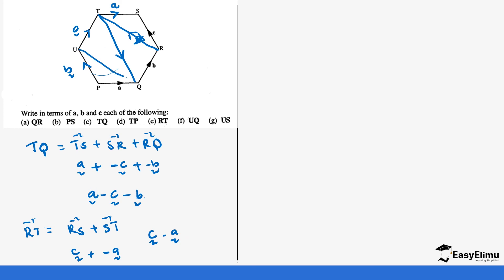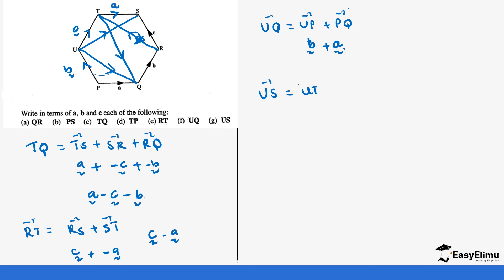For UQ, we are moving from U to Q. So UQ equals UP plus PQ. UP is b and PQ is a, so the answer is b plus a. Finally for US, we move from U to S. We can go UT plus TS. UT is c and TS is a. So US equals c plus a.